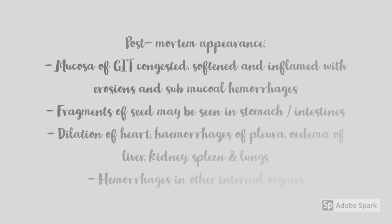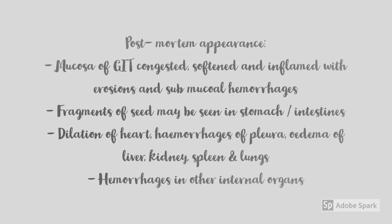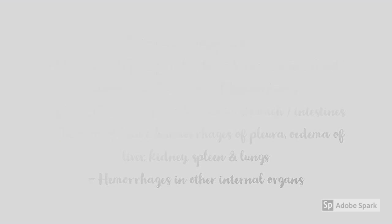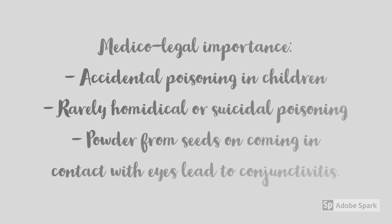In post-mortem examination of a person who died of Ricinus poisoning, the mucosa of the GI tract would be congested, softened, and inflamed with erosions and submucosal hemorrhages. Fragments of seed may be seen in the stomach and intestine. There would also be dilatation of the heart, hemorrhages of the pleura, thymus, liver, kidney, spleen, and lungs, as well as hemorrhages in other internal organs.